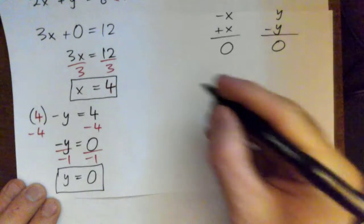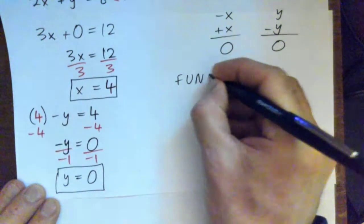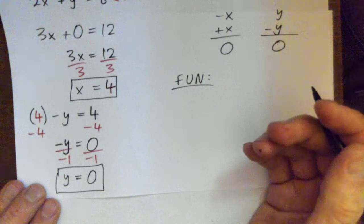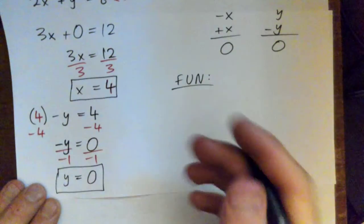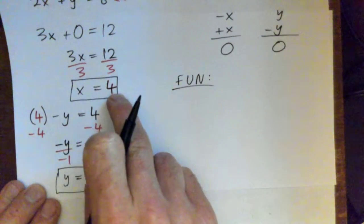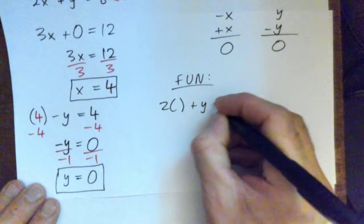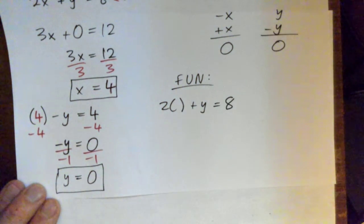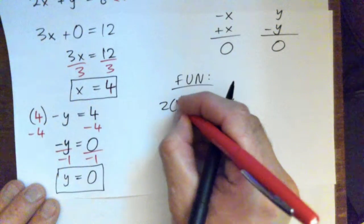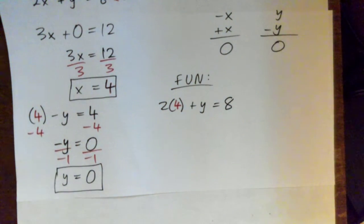And just for fun, I'm going to show everyone that you could have picked the other equation as well. That would have worked as well, and this is the kind of way to check things anyway. So we had x is 4, so 2 times 4 plus y equals 8. Find what y is. 2 times 4 plus y equals 8, find y in that equation.